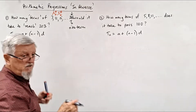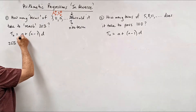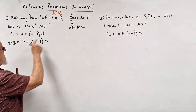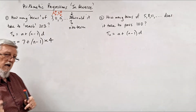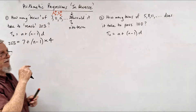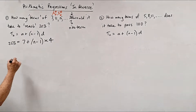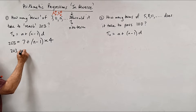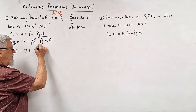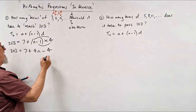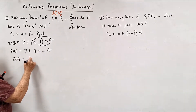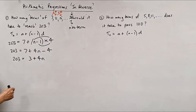Even students who watch this and feel comfortable can still make mistakes under pressure in assessments. So: a is 7, that's given in the formula; d is 4 since it's going up by 4s; and T_n equals 203. I'll expand the bracket first: n times 4 is 4n, and minus 1 times 4 is minus 4. So I can combine terms: 203 = 7 − 4 + 4n, which gives 203 = 3 + 4n.